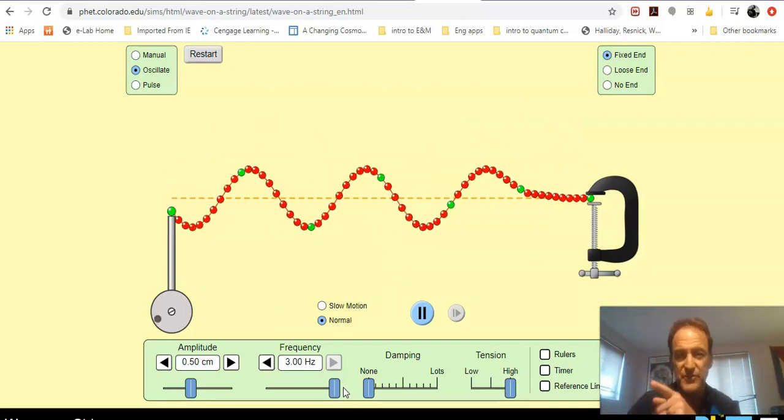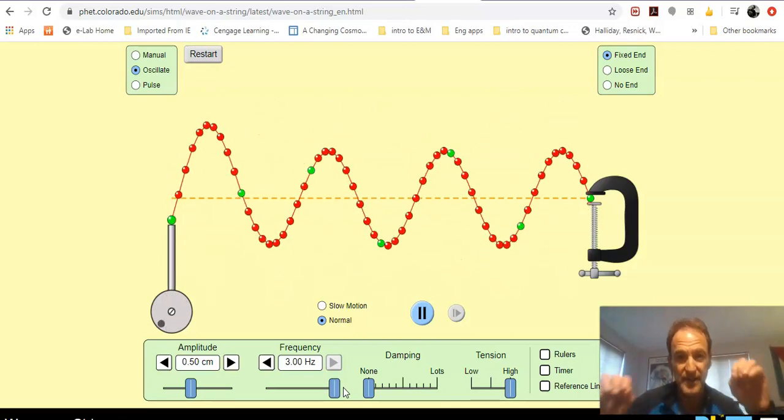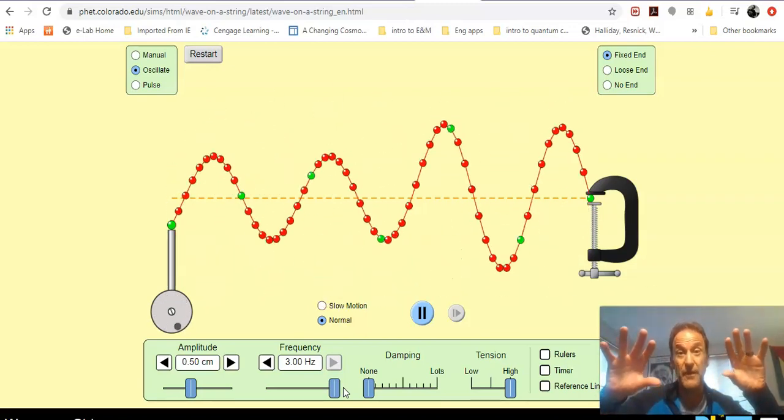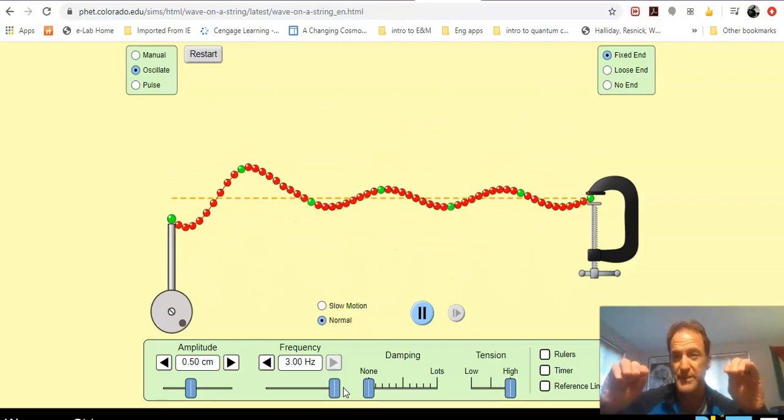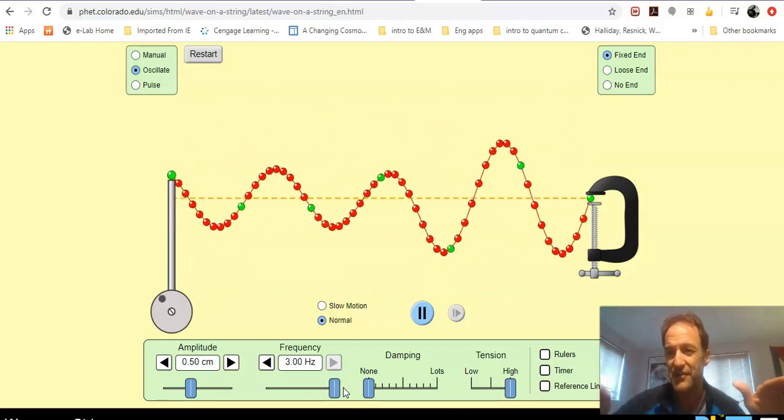So eventually you get to a point here, destructive interference there momentarily when it was flat. If it was a sound wave here, it would be getting louder. And then as the amplitudes are getting smaller, it would be getting softer and smaller and softer. And then no sound if it's flat like that.